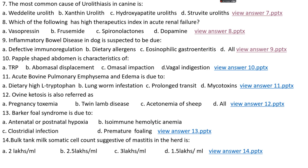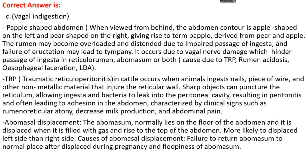Question number 10. Apple-pear shaped abdomen is characteristic of: options A, TRP; options B, abomasal displacement; option C, omasal impaction; or options D, vagal indigestion. The right answer is option D, vagal indigestion. Apple-pear shaped abdomen means that when viewed from behind, the abdomen contour appears apple-shaped on the left side and pear-shaped on the right, giving rise to the term 'papple' — derived from pear and apple. The rumen may become distended with gas due to impaired passage of ingesta and failure of eructation.